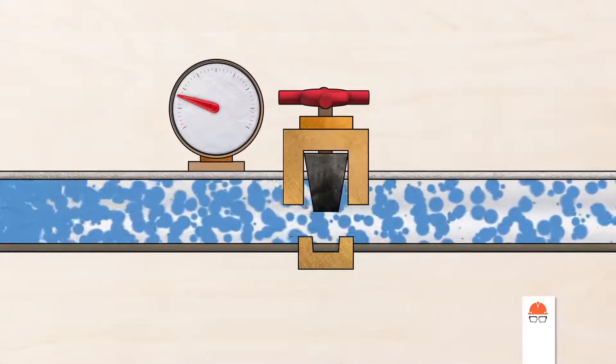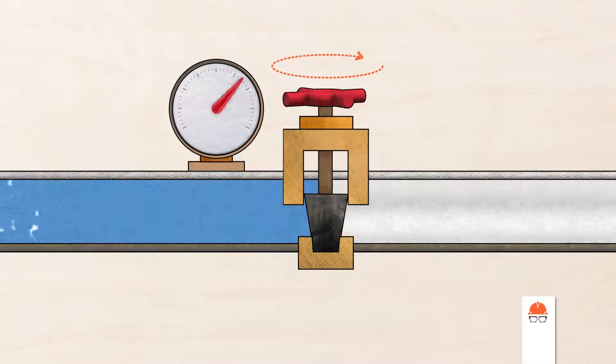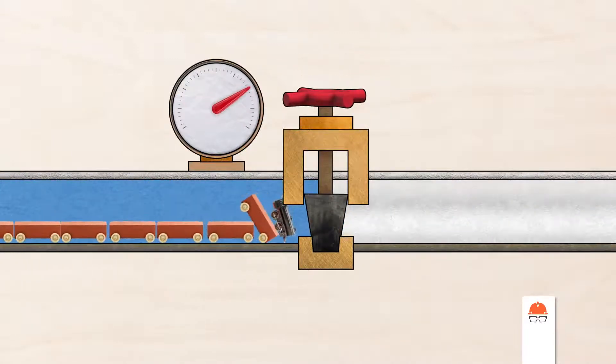Imagine you're an operator at the end of this pipeline in charge of closing a valve. If you close it quickly, you've essentially slammed those trains into a brick wall, and the pressure spike that results from such a sudden change in momentum can rupture the pipe or cause serious damage to other parts of the system.